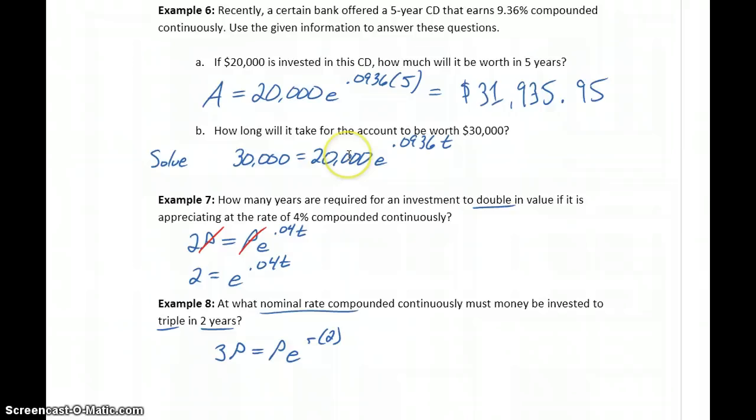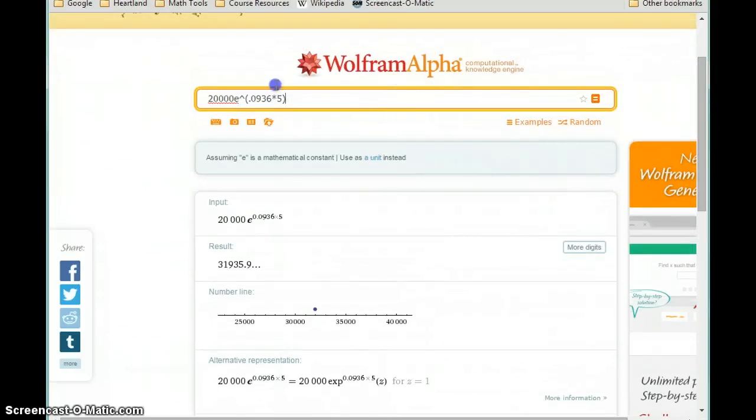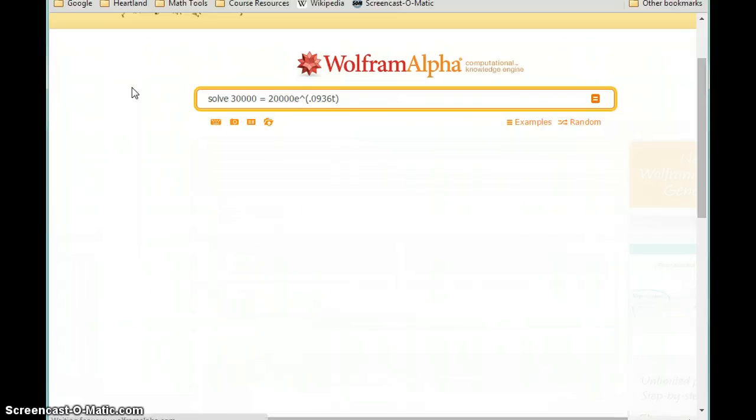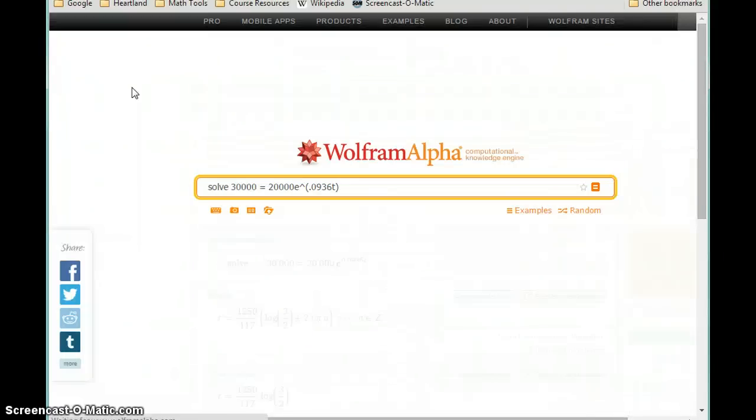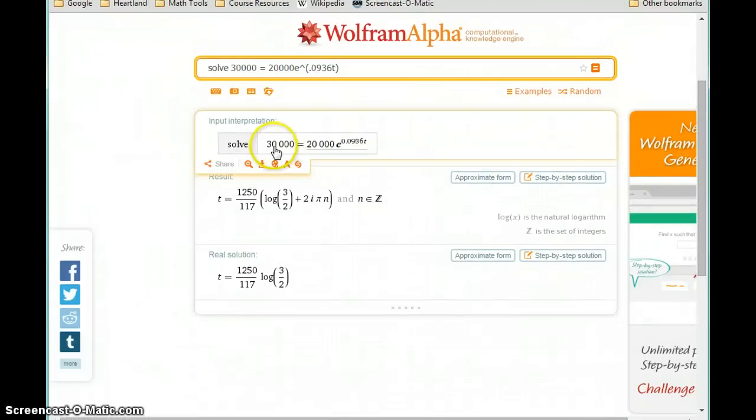In part B, we're asked how long will it take for the account to be worth $30,000. So in this case, we have a problem that we need to solve. So we'll ask Wolfram Alpha to solve 30,000 equals 20,000 e to the 0.0936 times t.